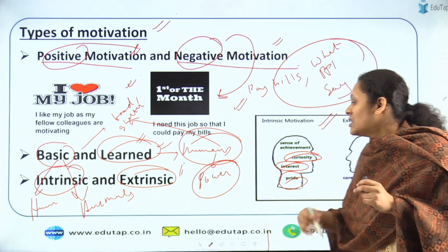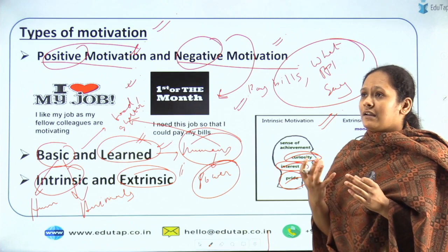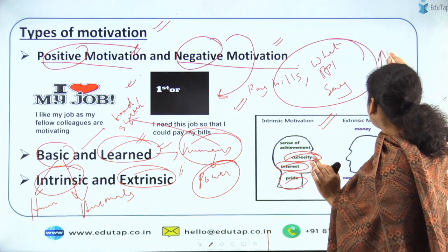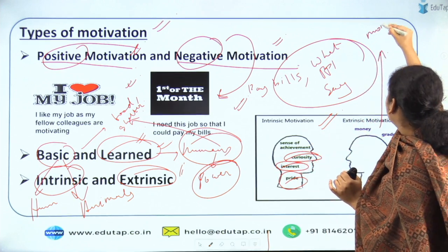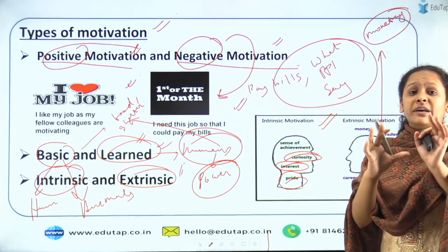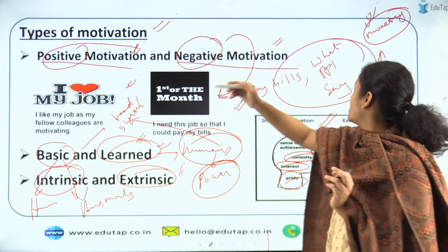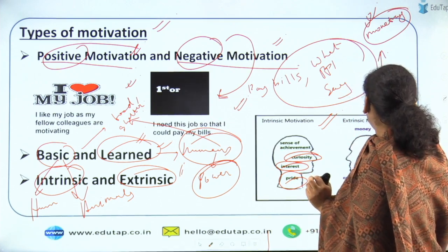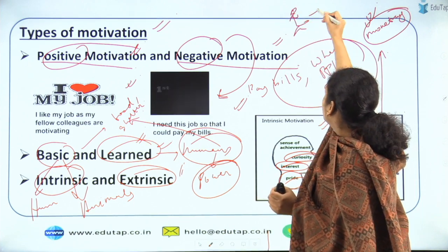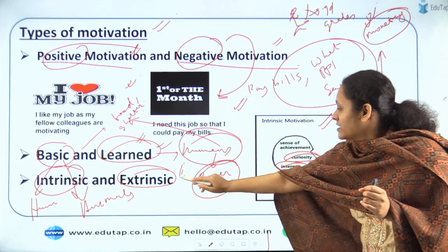Extrinsic motivation is when you take up something not because of an inner interest but for external rewards — for example, you take a job because you know it is going to pay you high, not because you are interested in it. If the money or perks you receive are high, that is why you are taking the job. Another example: you are a student who studies hard because you want good grades, not because you want to enrich your knowledge. That is an example of extrinsic motivation.